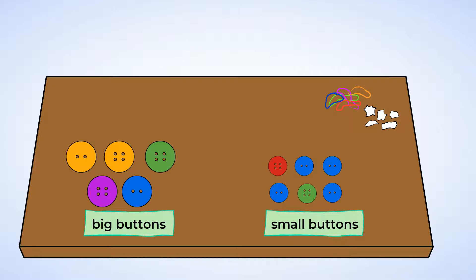But I wonder, how many small buttons does Sue have? Well, let's count. One, two, three, four, five, six. Sue has six small buttons. Six small buttons and five big buttons.